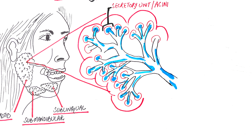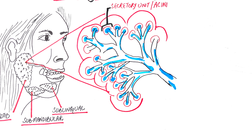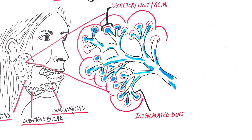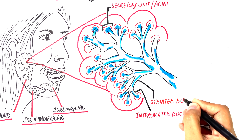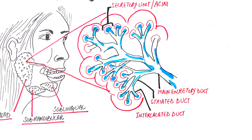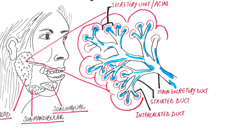The acinar part of the glands secretes the primary saliva, shown here in blue. The primary saliva is the newly formed saliva which is then modified in the ductal system. The ductal system is composed of three types of ducts: starting from the secretory end unit or acini, these are the intercalated ducts, the striated ducts, and the main excretory duct through which saliva is excreted into our mouth.